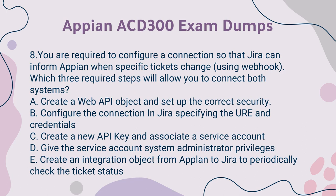Question 8: You are required to configure a connection so that Jira can inform Appian when specific tickets change, using a Webhook. Which three required steps will allow you to connect both systems? A. Create a Web API object and set up the correct security. B. Configure the connection in Jira specifying the URL and credentials. C. Create a new API key and associate a service account. D. Give the service account system administrator privileges. E. Create an integration object from Appian to Jira to periodically check the ticket status.